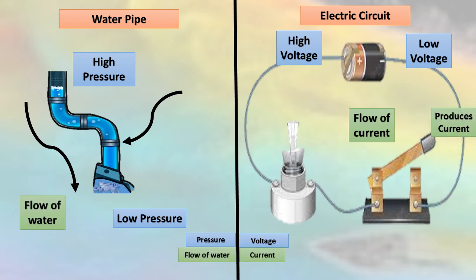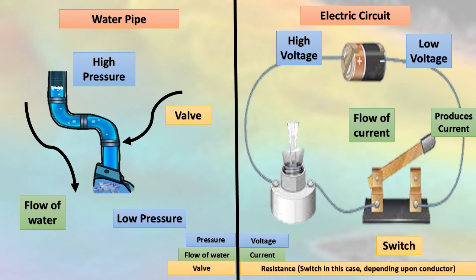Now we have seen that electrons have started to move, hence current is produced. I is the current which is rate of flow of electrons or water flowing in case of water analogy. R is the resistance which controls the flow of current and depends upon the conductor.